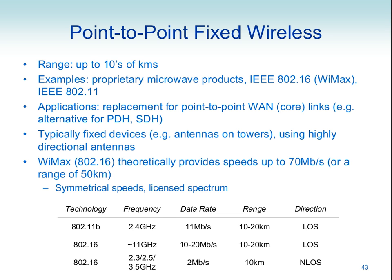LOS means line of sight — between the transmitter and receiver there are no obstructions. If you stood at the transmitter with perfect eyesight, you'd be able to see the receiver — there's no building in between. Non-line of sight means there may be obstructions. WiMAX can be used in two different modes: a point-to-point mode and a point-to-multipoint mode.